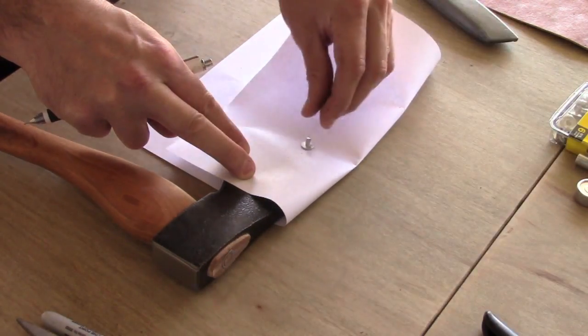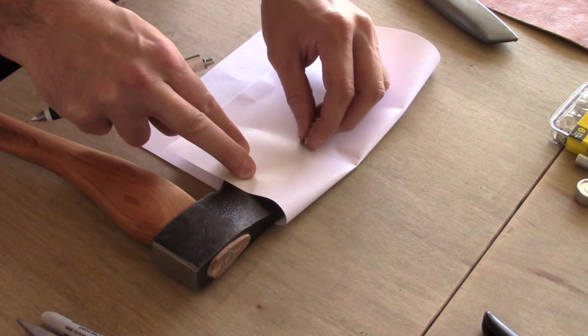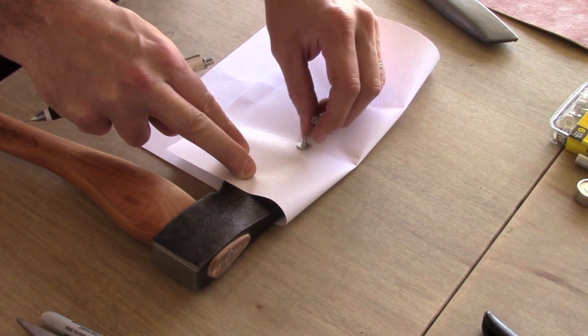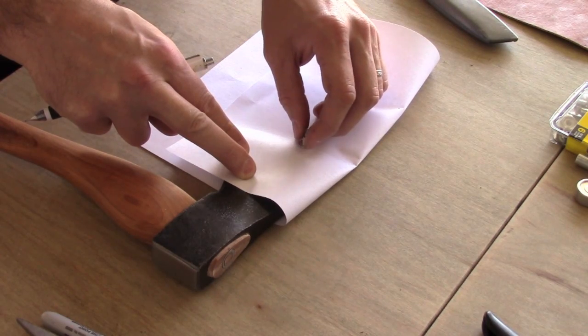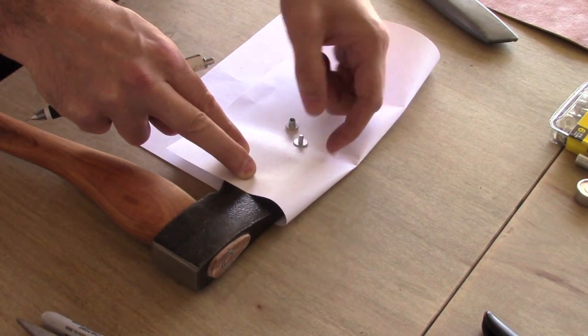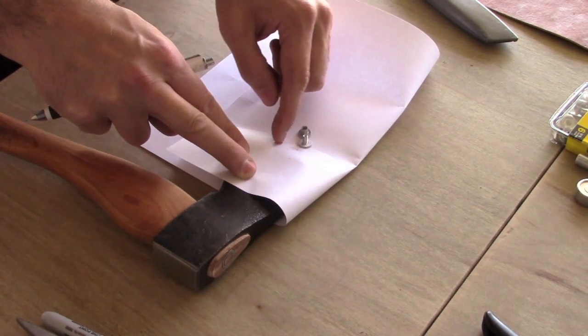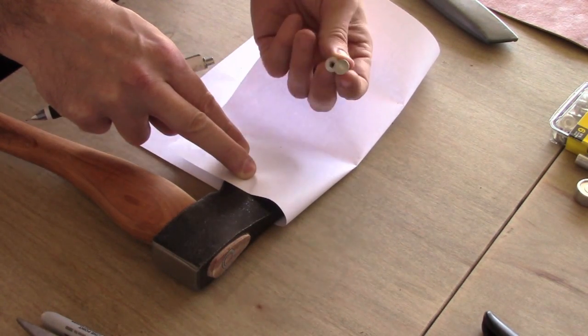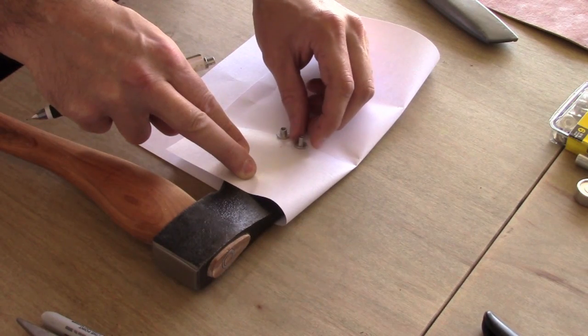Because these Chicago screws, you can either find them in brass and aluminum. I was only able to find the aluminum ones at my local hardware store. But that's not going to scratch your blade or dent your blade. You don't want to use anything steel that's going to mar the blade of the axe.